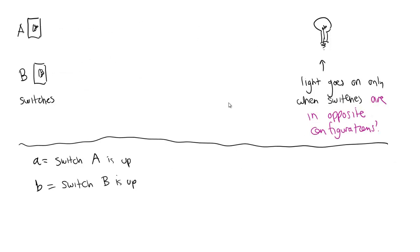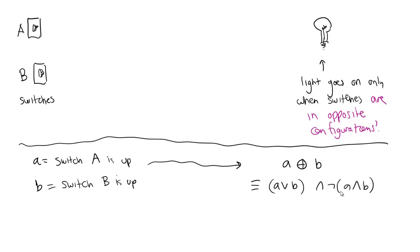Now let's change this: what happens if the light goes on only when switches A and B are in opposite positions? A has to be up and B down, or A down and B up. The propositional logic statement there is just an exclusive OR. Unfortunately there's no exclusive OR gate in digital circuit theory, so we have to break it down into NOTs, ANDs, and ORs. We showed that A XOR B is logically equivalent to: A OR B, but NOT A AND B — one of the two has to be true but they can't both be true simultaneously.